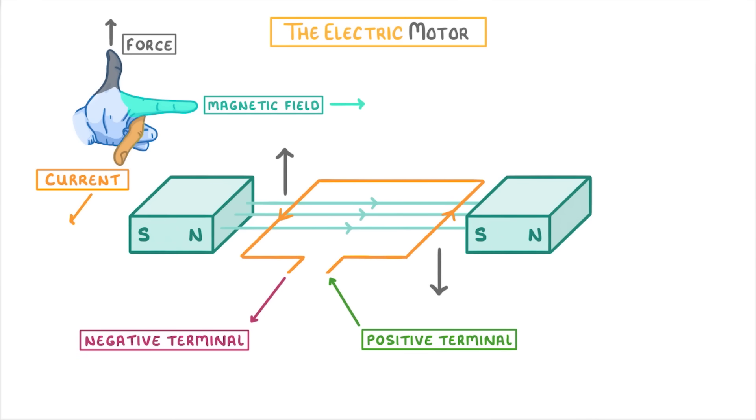Because the left side of our coil experiences an upwards force, and the right side experiences a downwards force, our coil will start to spin clockwise.